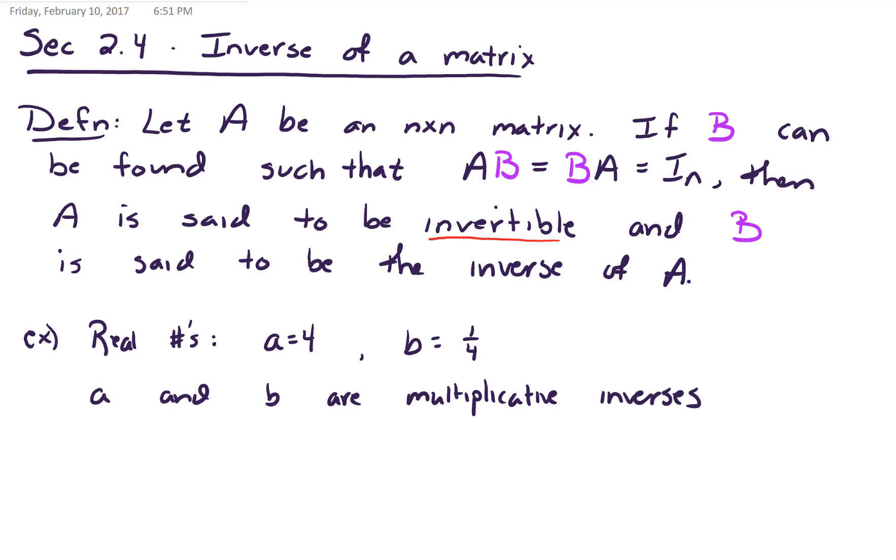Why? Because a times b, that's just 4 times 1/4, equals 1. And in the land of real numbers, 1 is the multiplicative identity. And it's also true that b times a equals 1/4 times 4, that equals 1.